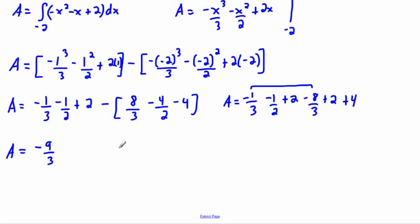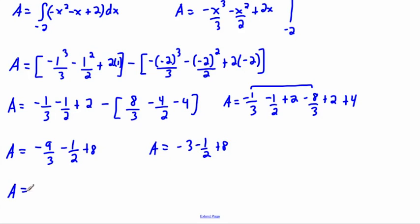Now I can combine negative one over three and negative eight over three: negative one minus eight gives negative nine over three. There's a one-half just hanging out on its own. Then combining the constant terms: two plus two is four, plus four is eight. Nine over three is just three, so this becomes negative three minus one-half plus eight. Eight minus three is five, so five minus one-half.